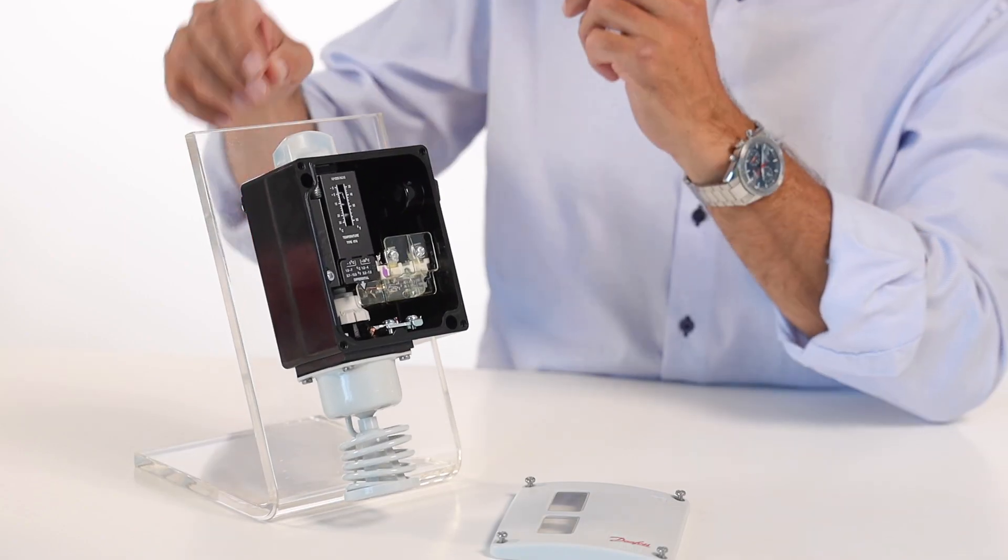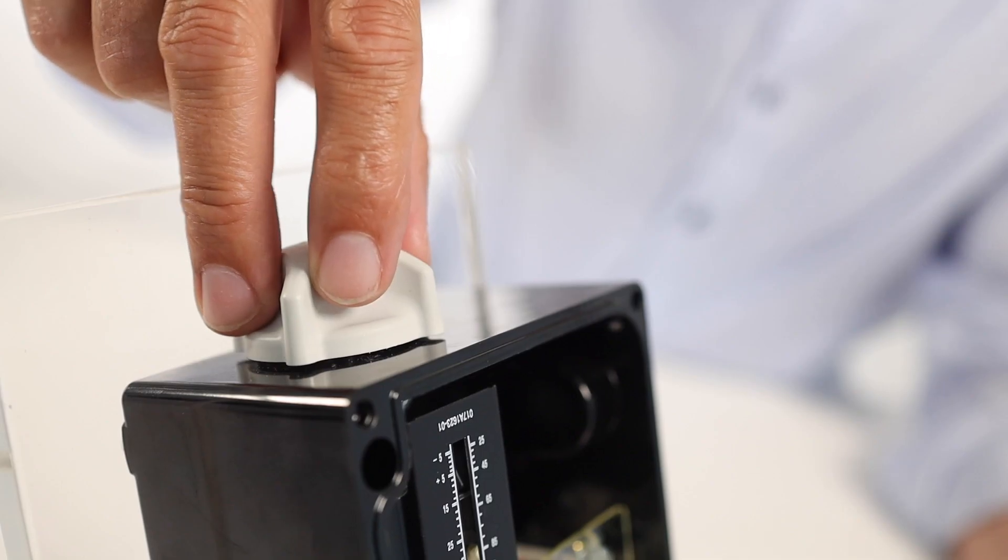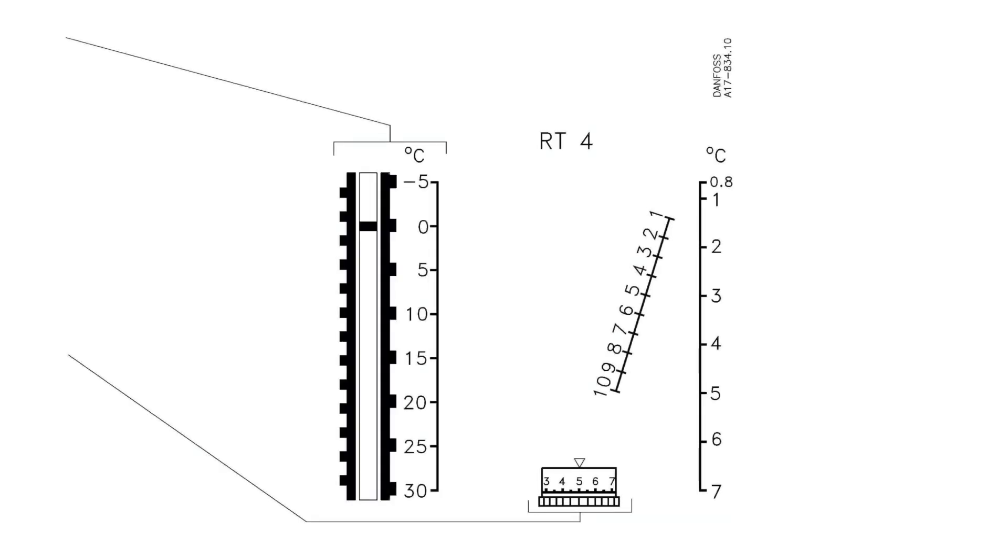At the top, you'll find the setting knob, which is used to set the range. An RT4 covers the range from -5 to 30 degrees Celsius.